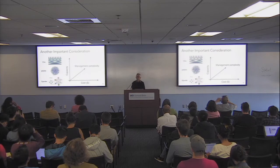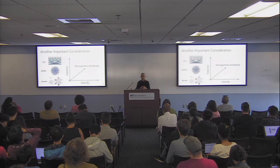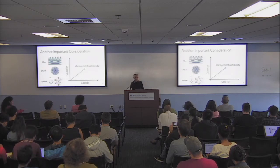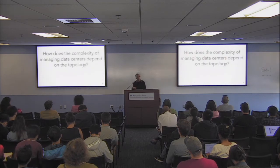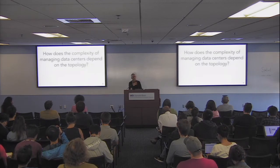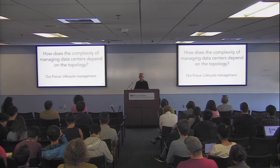Given what I said about how management impacts how you run the network, a third important dimension is management. But it's hard to say what it even means for something to be complex from a management perspective — you need some kind of metric to decide what management complexity is. The question we asked is: how does the complexity of managing the data center depend on the topology?